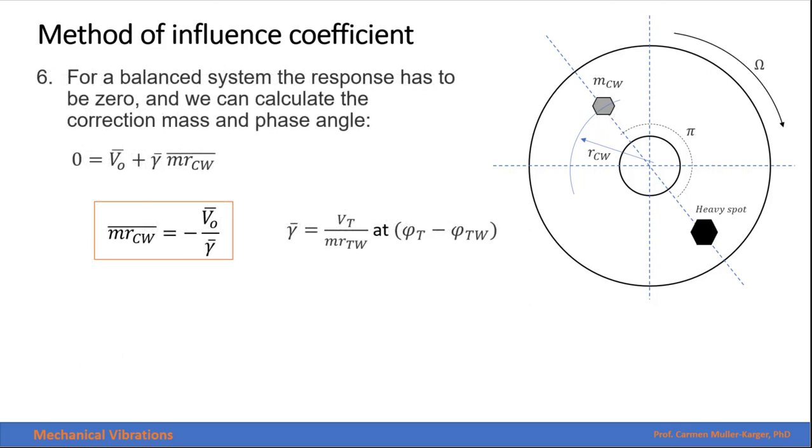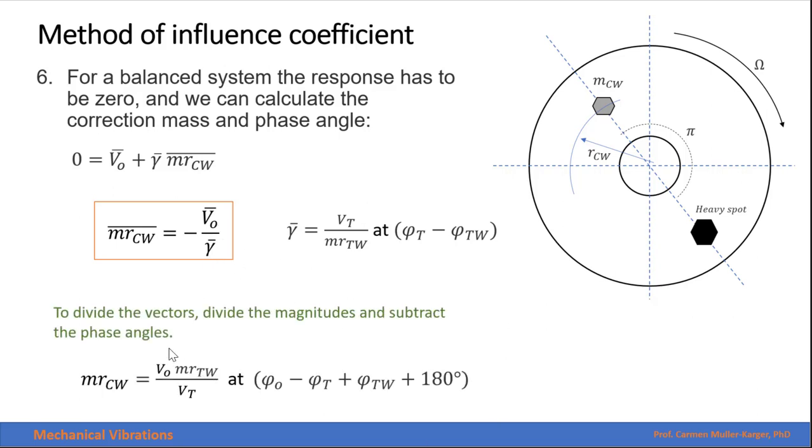For a balanced system, we force the response to be 0. And then we calculated the correction mass. And now we have to also calculate the correction angle. To divide those two vectors, we divide the magnitudes and we subtract the angles. As you see here, this vector is negative. It goes in the opposite side of the heavy spot. If we write the magnitude as positive, we just add 180 to express our vector in the opposite direction.